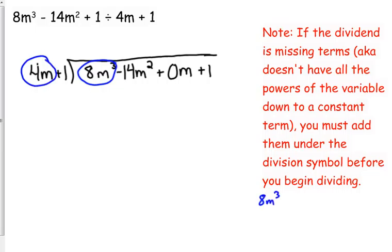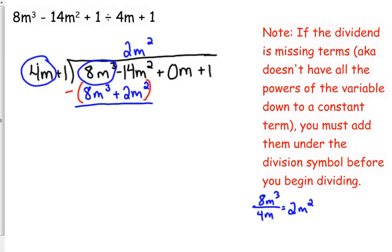Let's begin by dividing the first term by the first term of the divisor. So, 8m cubed over 4m. Some people really do find it helpful to do this over to the side. 8 over 4 is 2, m cubed over m is m squared. Make sure you line that up over the term that has the same power. 2m squared. Multiply it by 4m and 1. Then, we're going to subtract. 8 minus 8 is 0. Negative 14 minus 2 is negative 16m squared. Bring down your 0m and your 1.